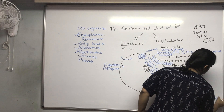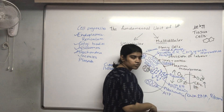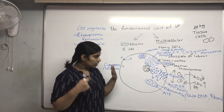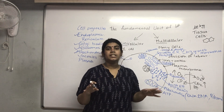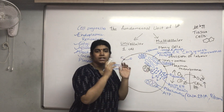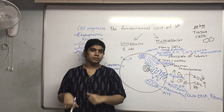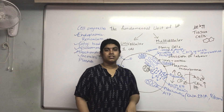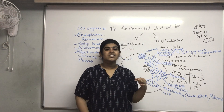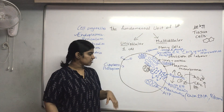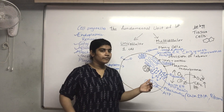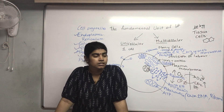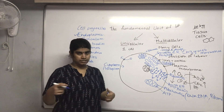Mitochondria have their own DNA and ribosomes. An interesting fact: in the whole body there are 23 pairs of chromosomes — one pair from the father, one from the mother — but mitochondrial DNA is received only from the mother. Therefore, certain traits you have are more like your mother than your father because of mitochondrial inheritance.